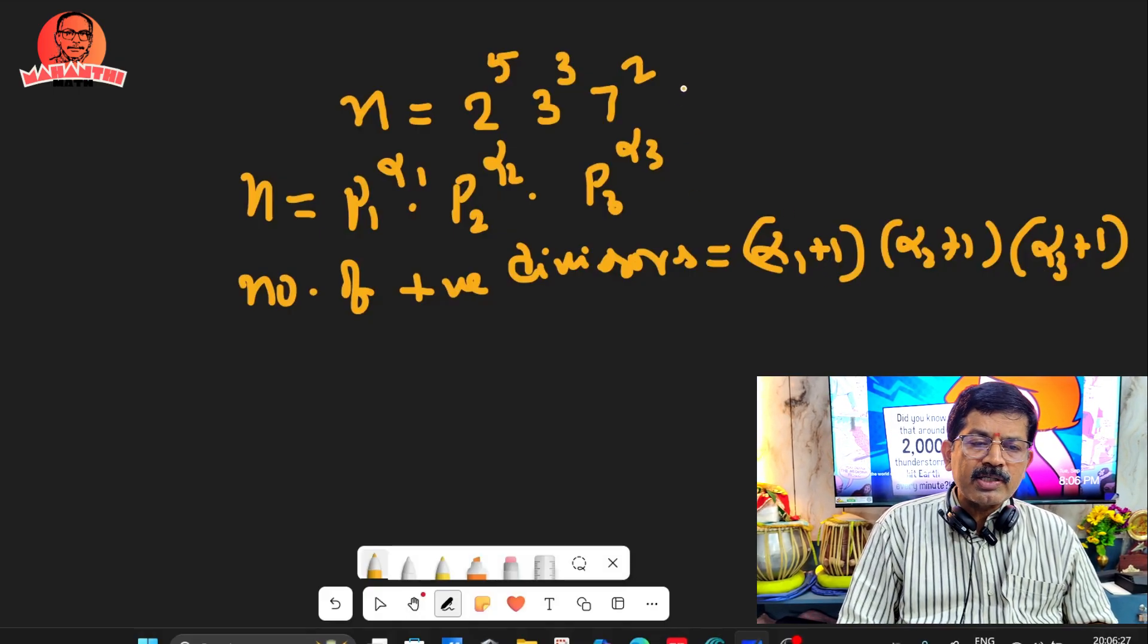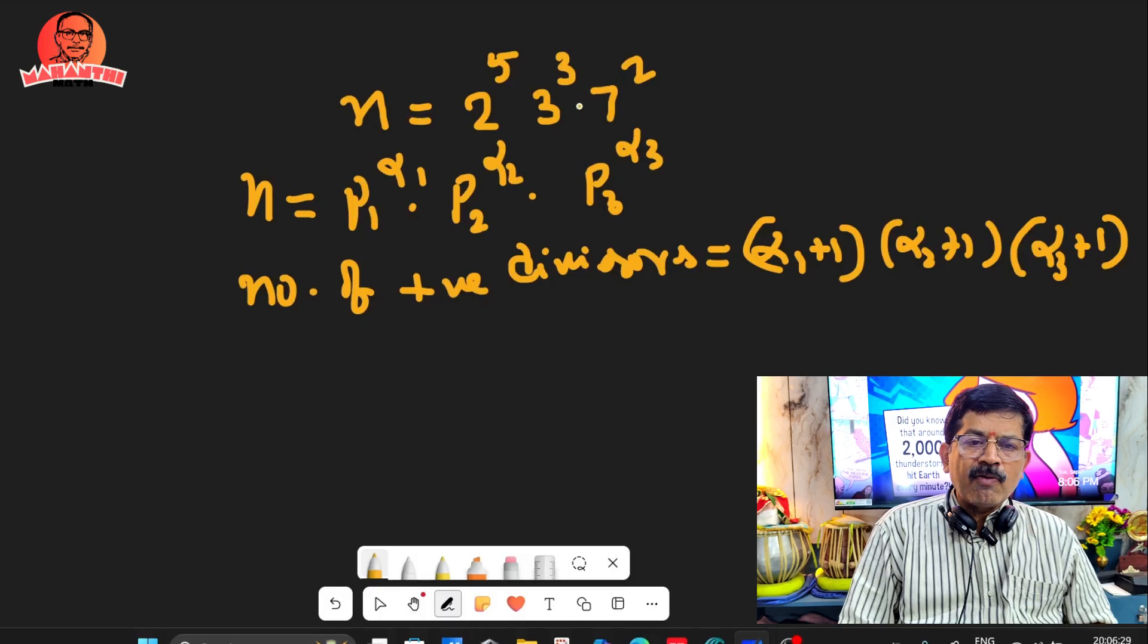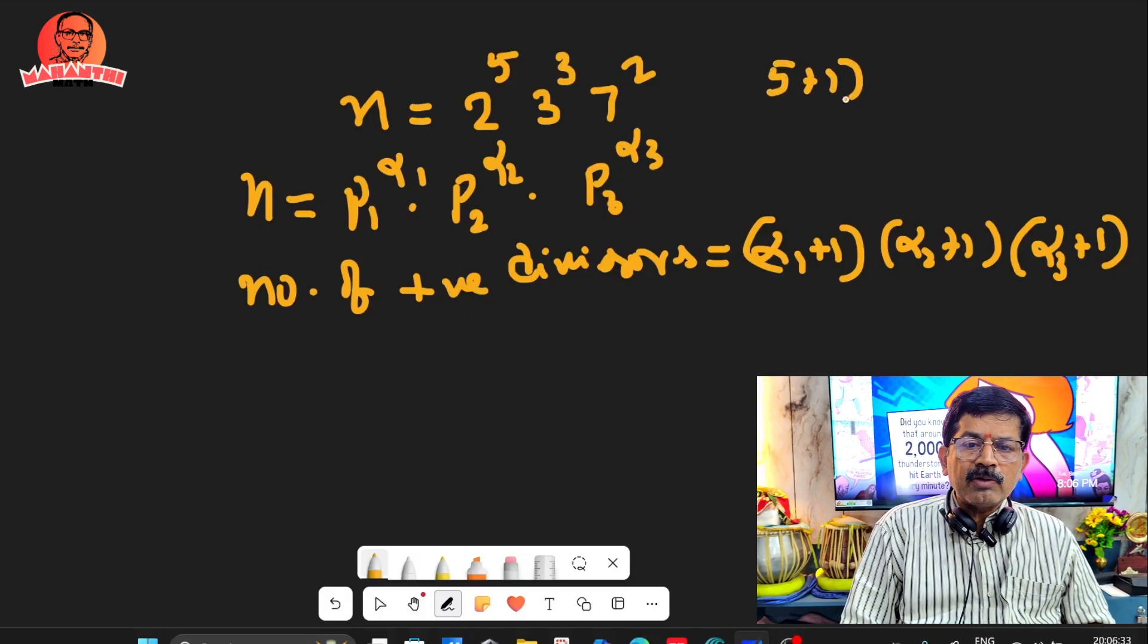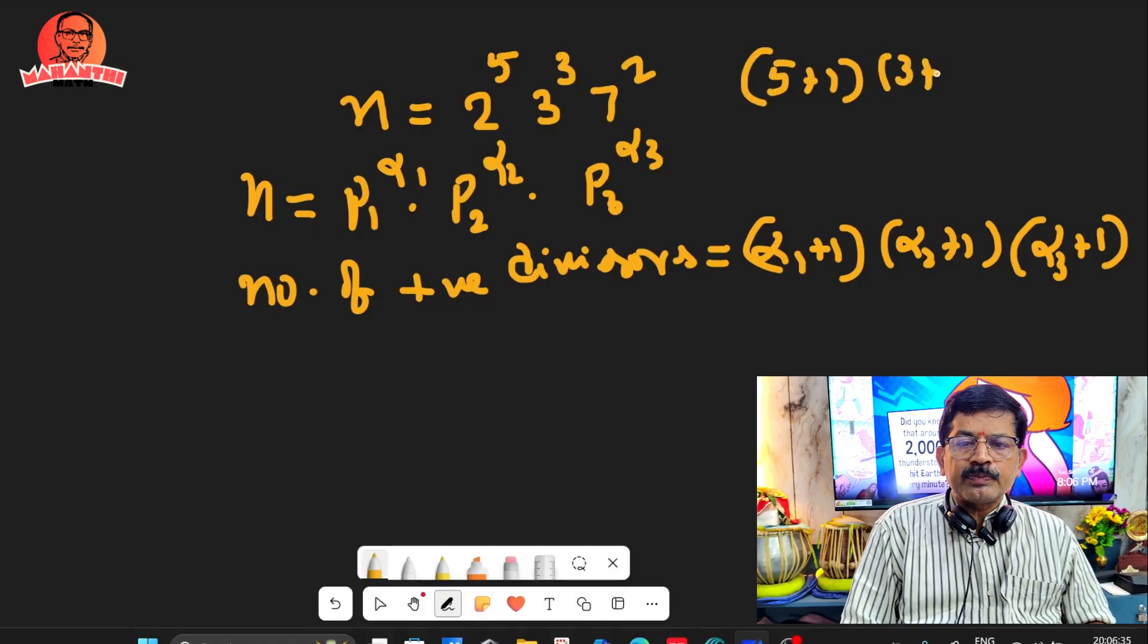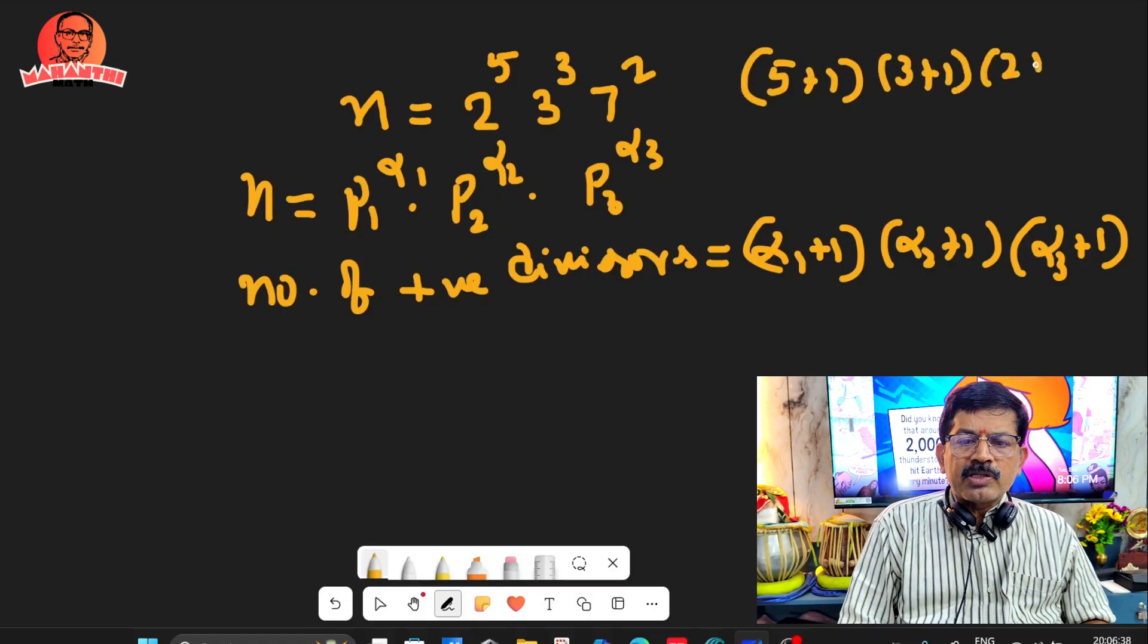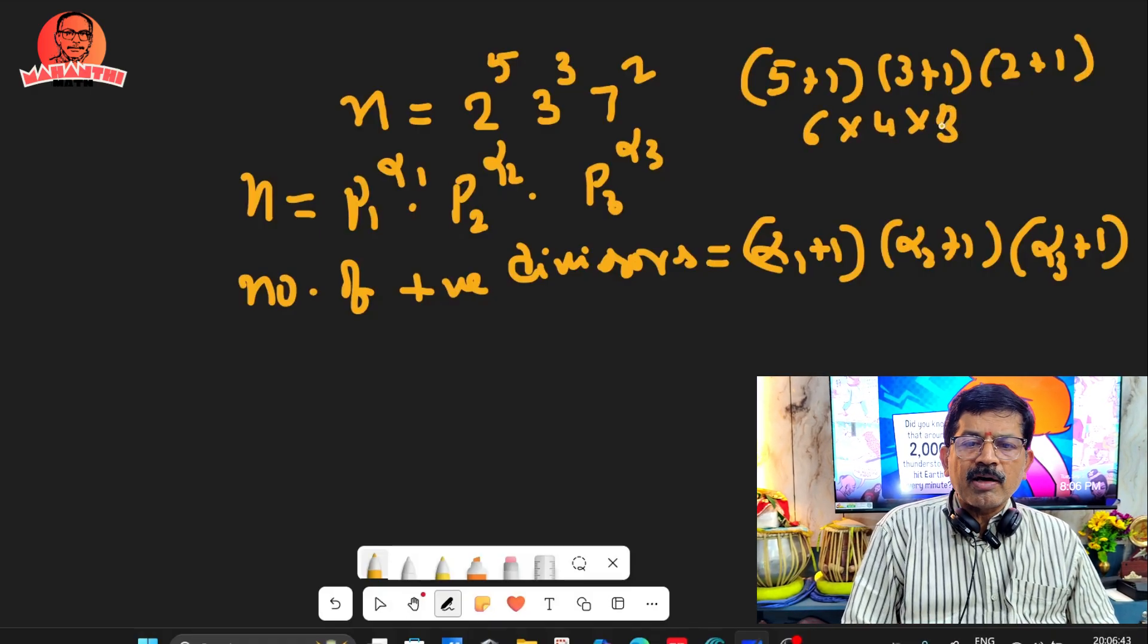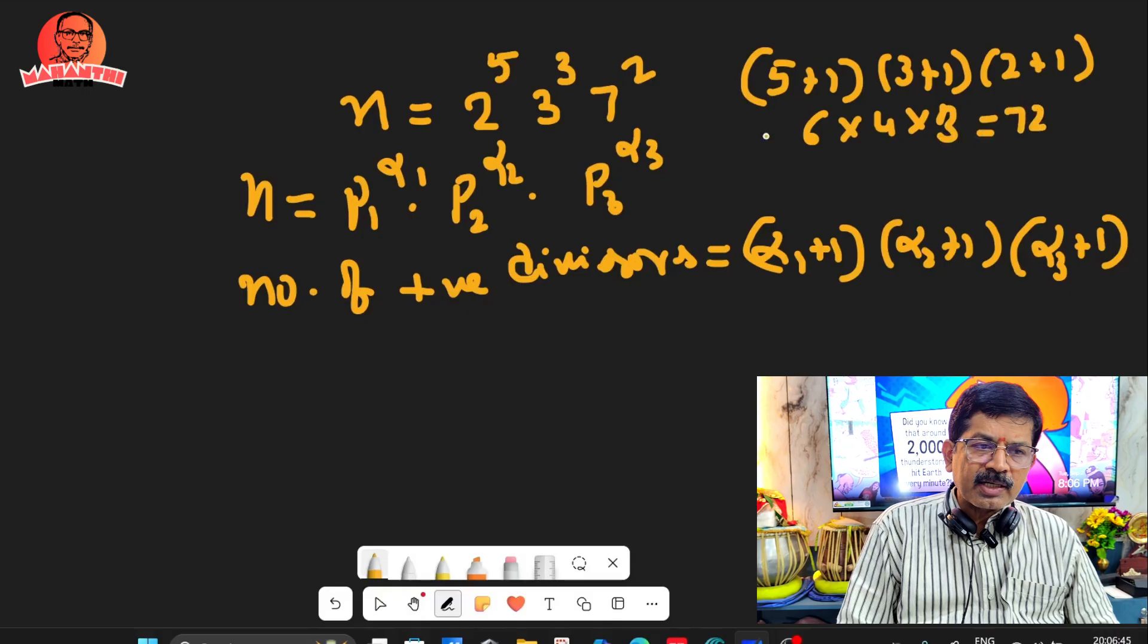So what is the answer for this one? The number of positive divisors for this n is 5 plus 1, times 3 plus 1, times 2 plus 1. So 6 × 4 × 3, that is 72. There are 72 positive factors for n.